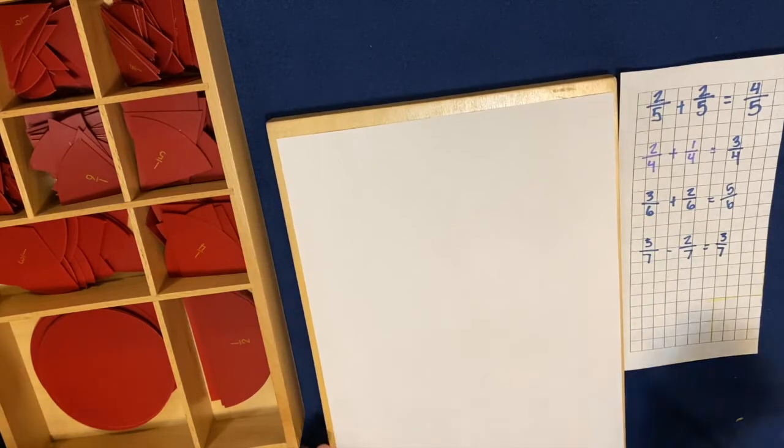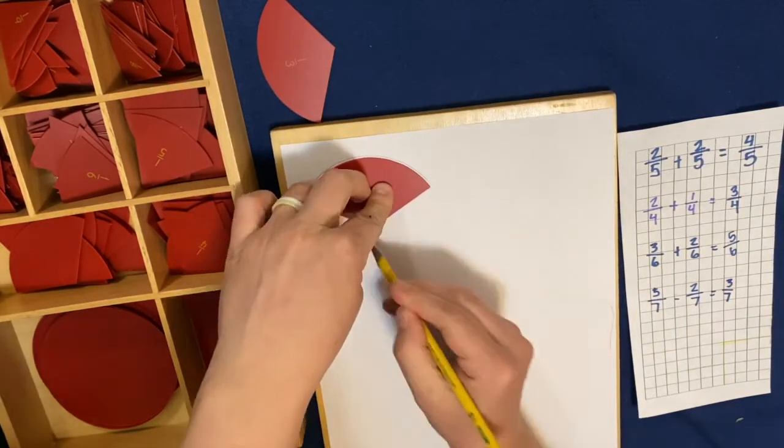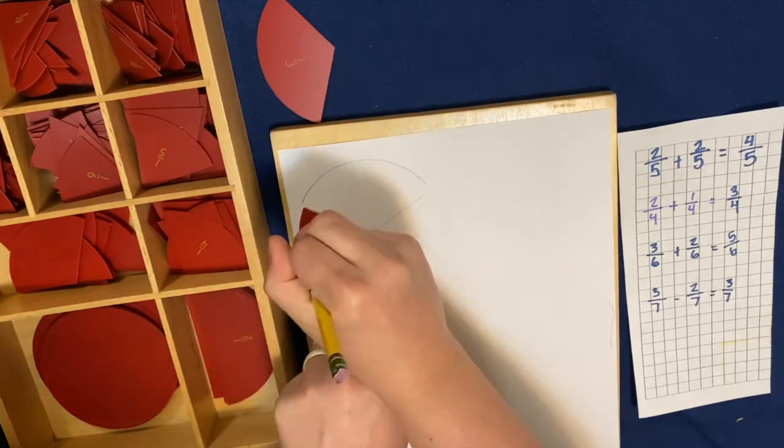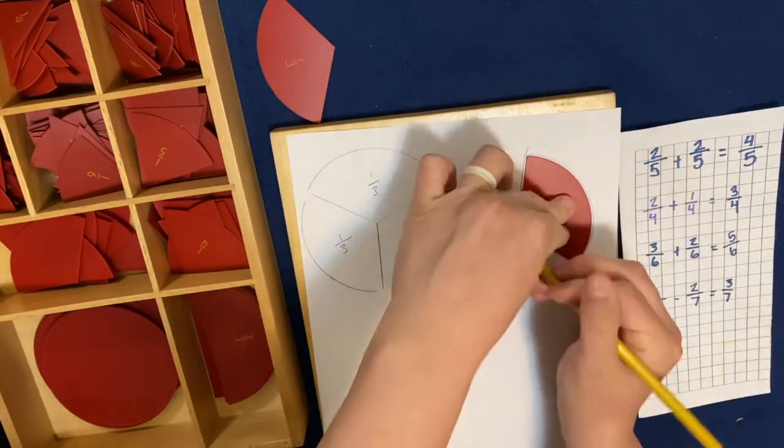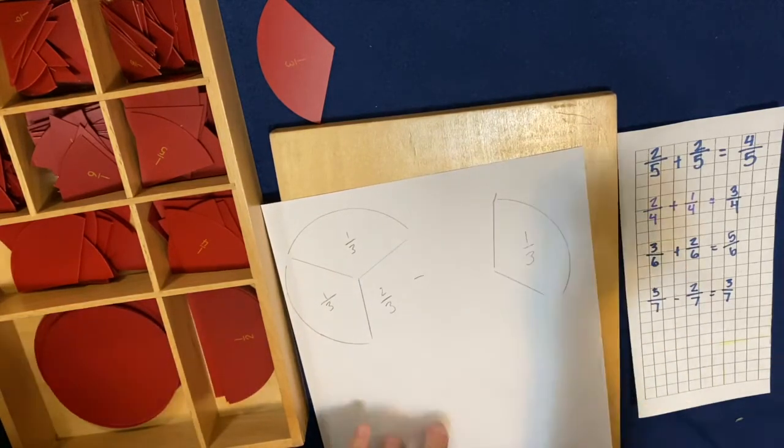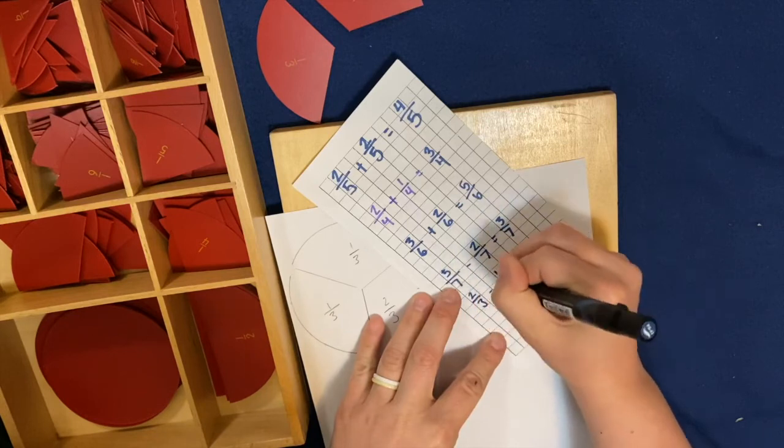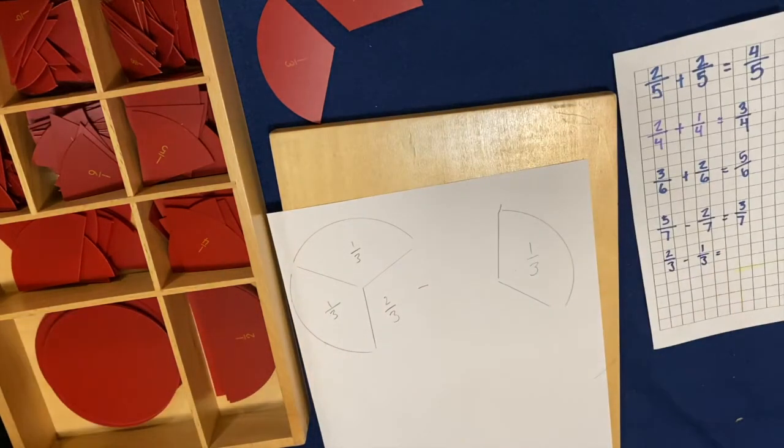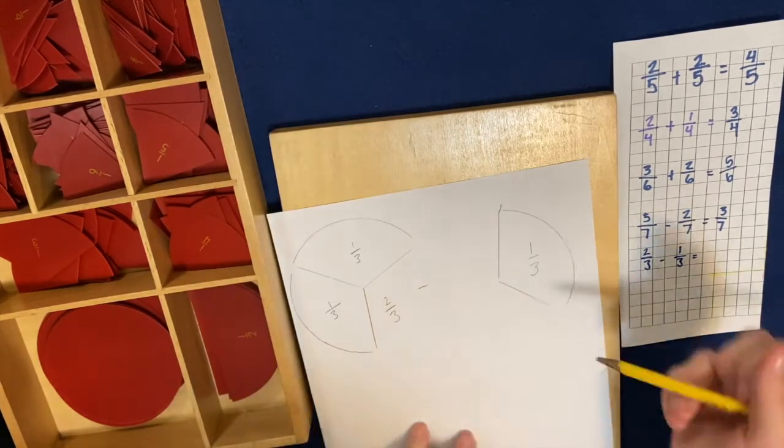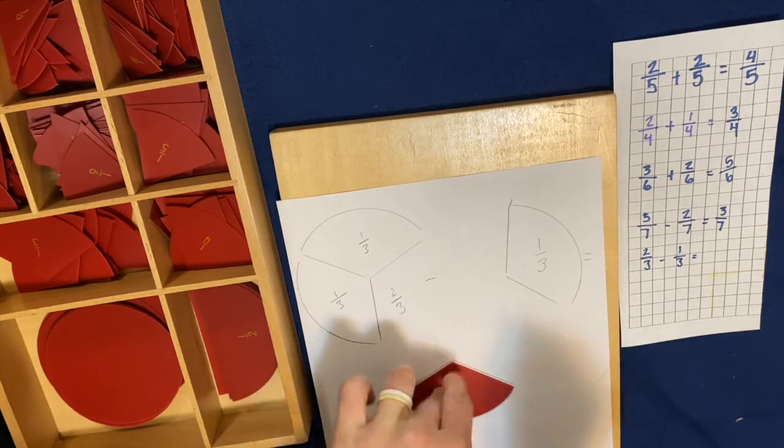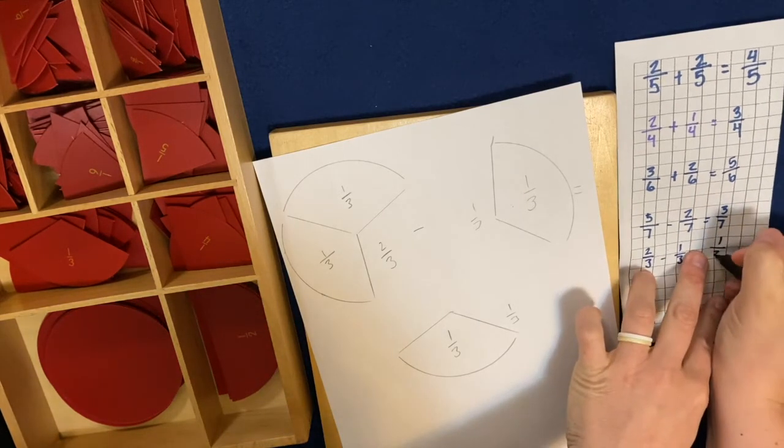Okay. Let's do another one. If I wanted to do two-thirds minus one-third, let's write it on our paper. Two-thirds minus one-third. If I took one-third away from here, because that's what we're supposed to take away, how many thirds do we have left? We just have one. One-third. So this equals one-third.